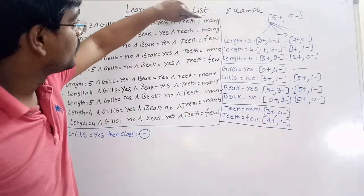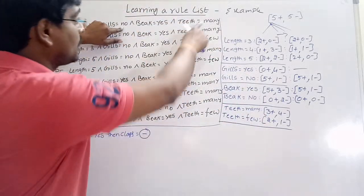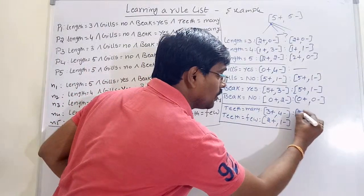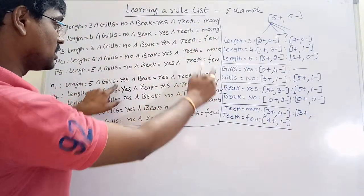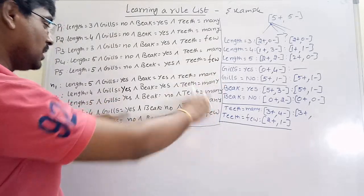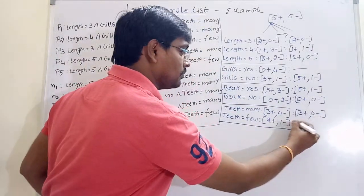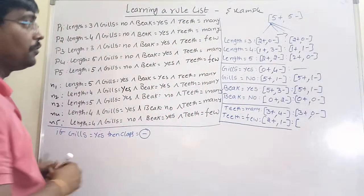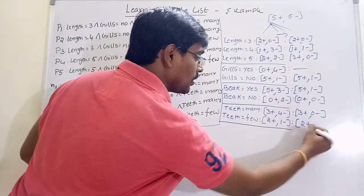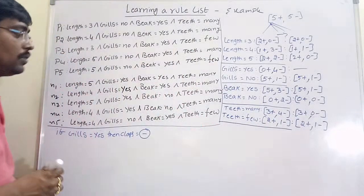For teeth equal to many: instances with gills equal to no are included — three positives included. For negatives: all have gills equal to yes, so they are removed — all negatives eliminated. For teeth equal to few: two positives with gills equal to no are included; one negative (N2) with gills equal to no is also included — two positives and one negative.